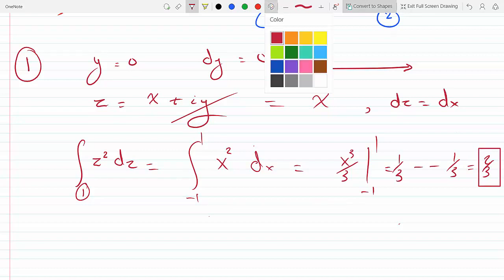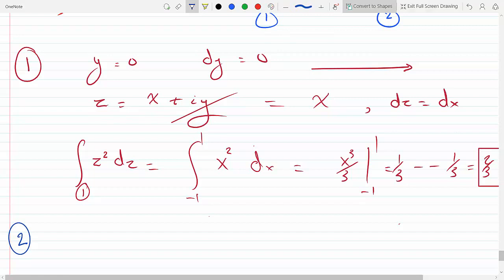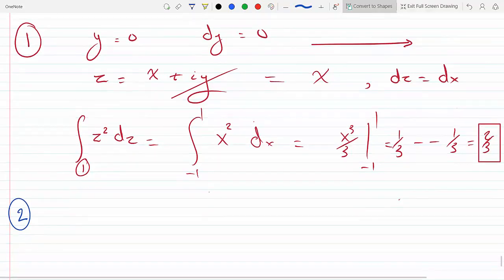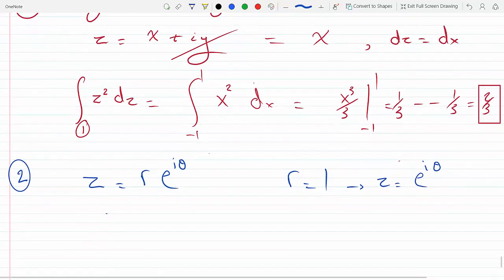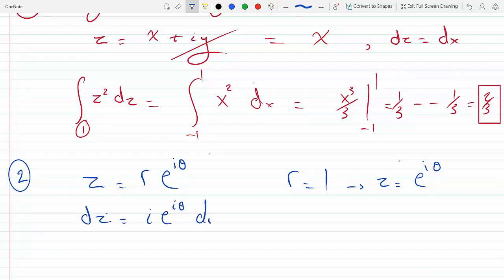Let's go on to path number two. Since this is a semicircle, we will use polar coordinates. For polar coordinates, that is just r e to the i theta, but r is fixed at 1, so z equals e to the i theta. And dz would be i e to the i theta d theta, the angle is changing as we loop around the circle.